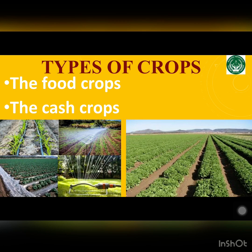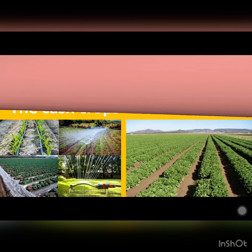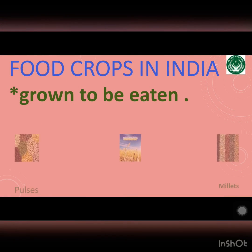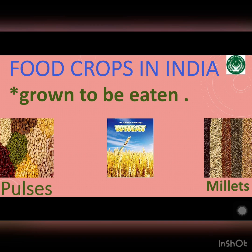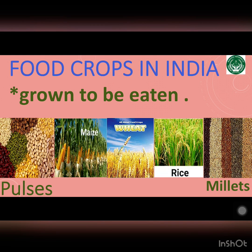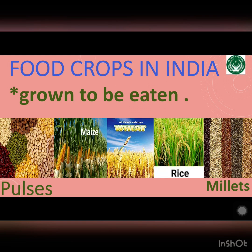The crops grown are of two types: food crops and cash crops. The crops which are grown to be eaten are called food crops. Some examples are rice, wheat, millets and pulses. Rice and wheat are the main food crops.